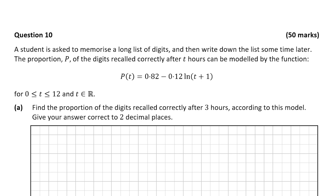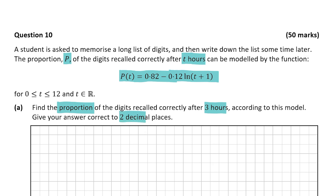We're told that a student is asked to memorize a long list of digits and write down the list sometime later. The proportion P of the digits recalled correctly after T hours is modeled by P(T) = 0.82 minus 0.12 ln(T + 1). Question A asks us to find the proportion of digits recalled correctly after 3 hours, correct to 2 decimal places.